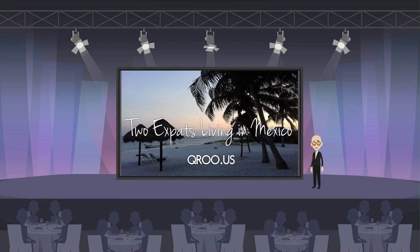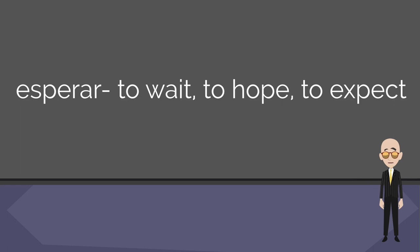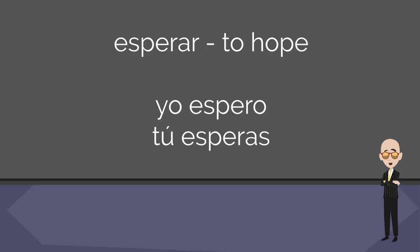Today we're going to continue talking about the subjunctive and I'm going to start out by teaching you a new verb: esperar, which can have several different meanings depending on how it's used in a sentence. The most common are: to wait, to hope, or to expect. For example, if you see someone just standing on a street corner looking around, you can go up to them and ask, ¿Qué esperas? — What are you waiting for? It all comes down to context.